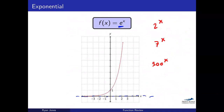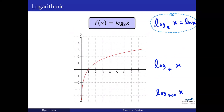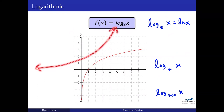Here I've graphed log base 2 of x. I could graph log base E of x — we abbreviate that as LN, the natural log, since it appears often enough to deserve a shorter name. The x-intercept is at (1, 0). Notice this shape looks like the exponential flipped on its side — that's because they're inverse functions.